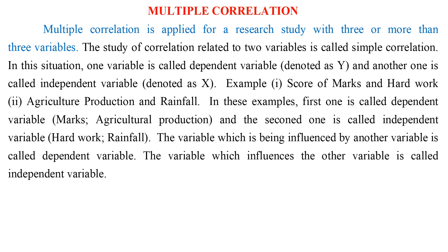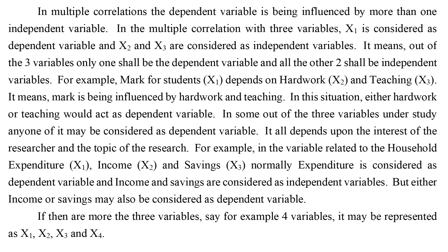Multiple correlation is applied for a research study with three or more variables. The study of correlation related to two variables is called simple correlation, where one variable is called the dependent variable (y) and another is the independent variable (x). In multiple correlation, the dependent variable is influenced by more than one independent variable.